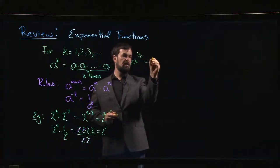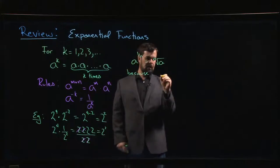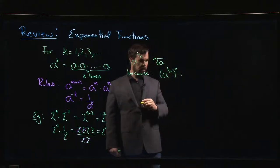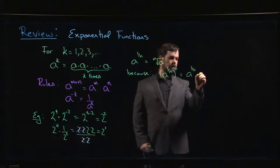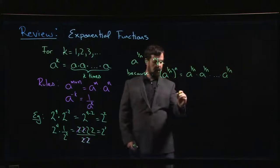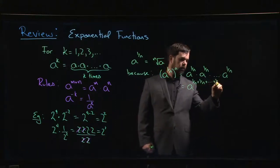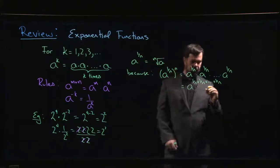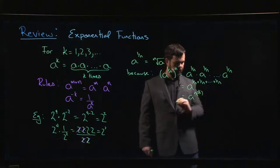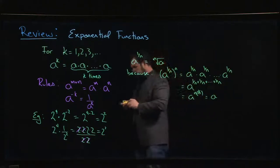You can also make sense of a to the 1 over n being equal to the nth root of a. If you take a to the 1 over n and raise it to the power n, that's a to the 1/n multiplied by itself n times, which gives a to the (1/n + 1/n + … ) n times — that's a to the n times 1 over n, which is just a to the 1, giving you a.